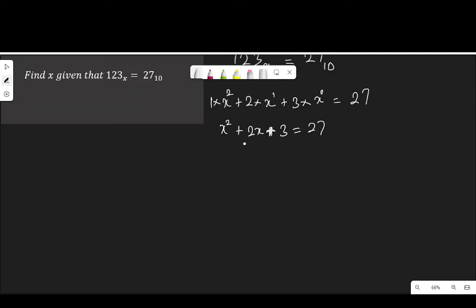Now, this is giving us a quadratic equation. So, x squared plus 2x plus 3. I am taking 27 to the other side. When it crosses equality, it becomes minus 27. Equal to 0. And I have x squared plus 2x, 3 minus 27 is minus 24, equal to 0.